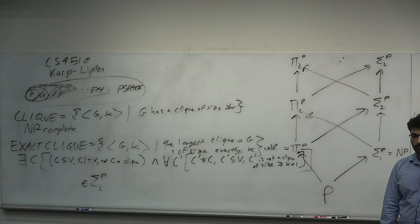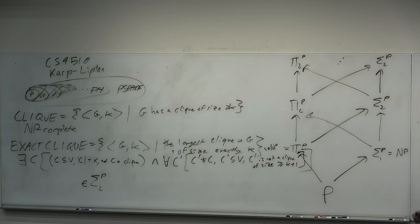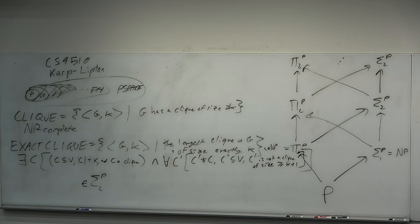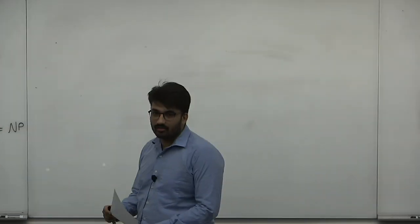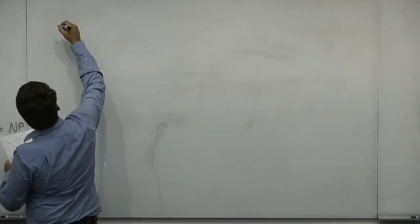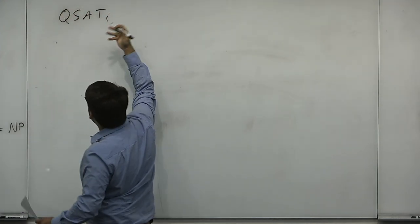A student asks: could you solve this by checking K a polynomial number of times? If you fix K, clique is in polynomial time since the number of subsets of size K is O(n^K). But K is part of the input, so it's not polynomial time. In fact, each class of the polynomial hierarchy has a complete problem — which is simply a generalization of SAT. We call it QISAT.